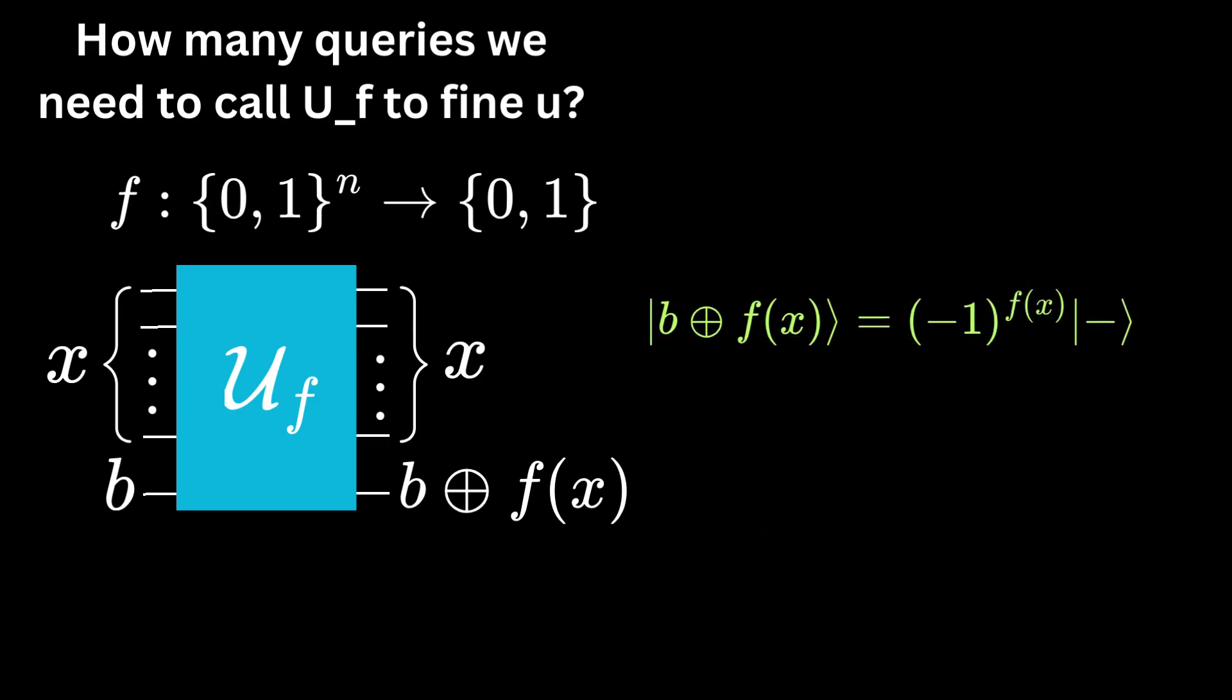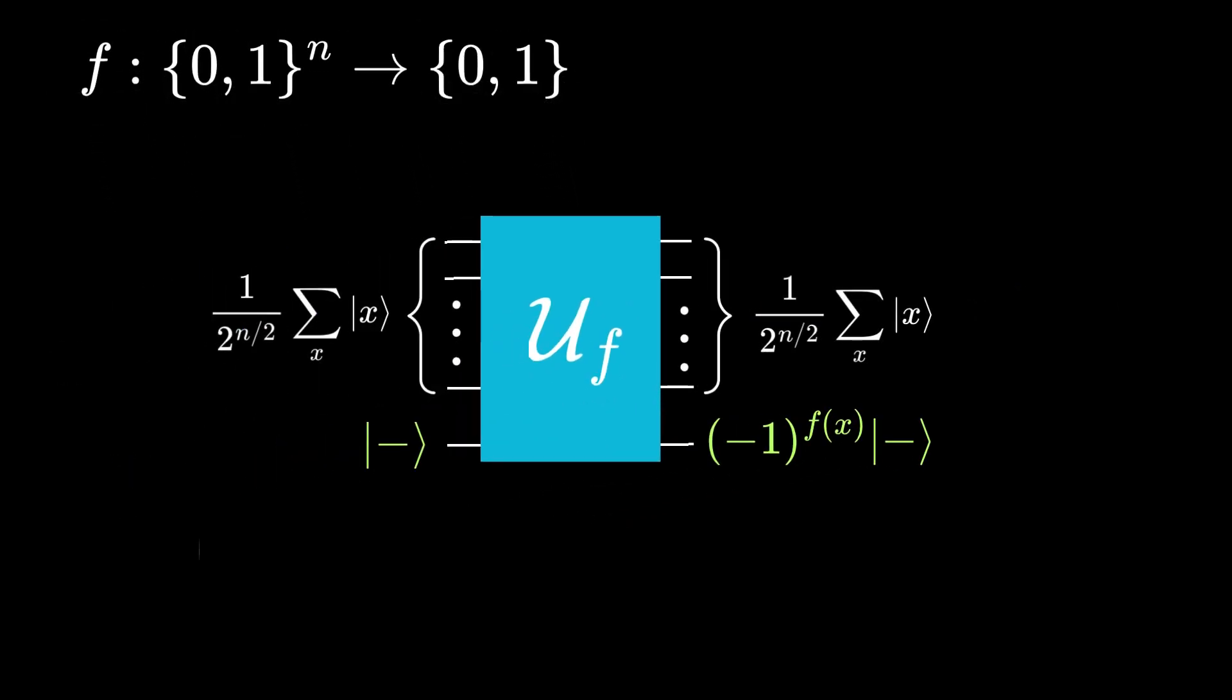So, the phase factor is -1 to the power of f(x). The input of the first n registers could be anything. For example, the superposition of all binary strings of length n. Since the circuit on the first n registers acts as the identity function, the output is the same.